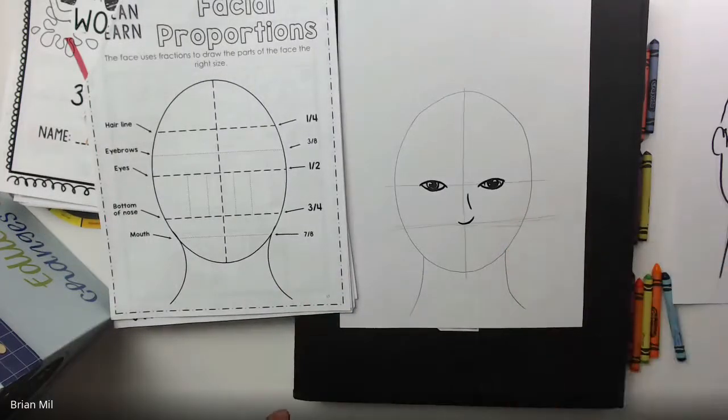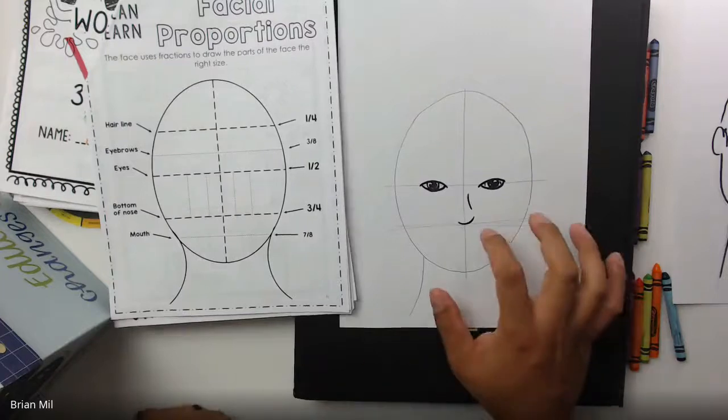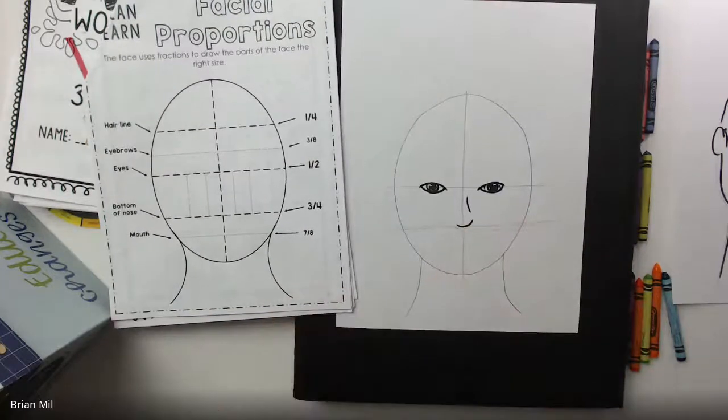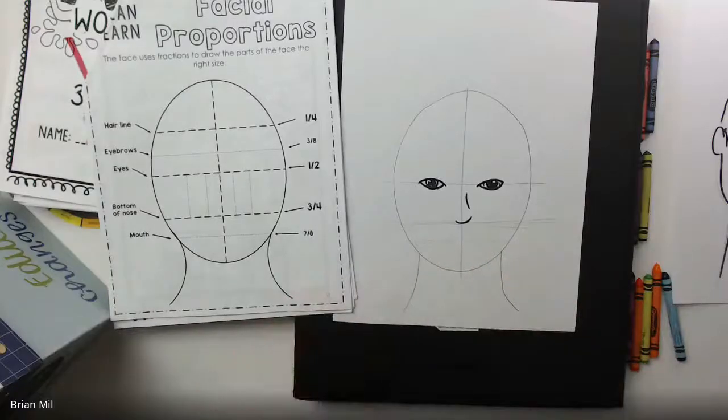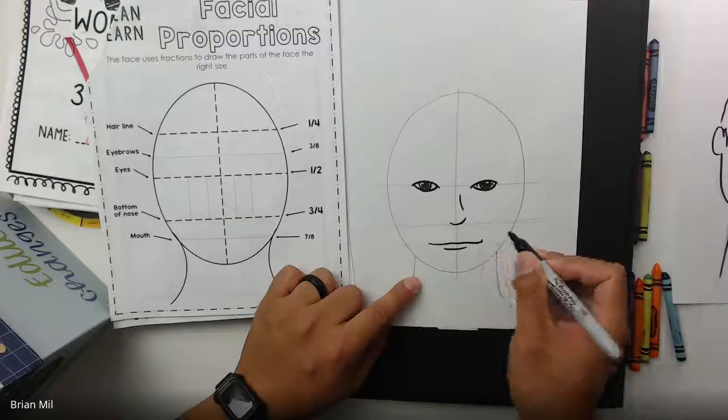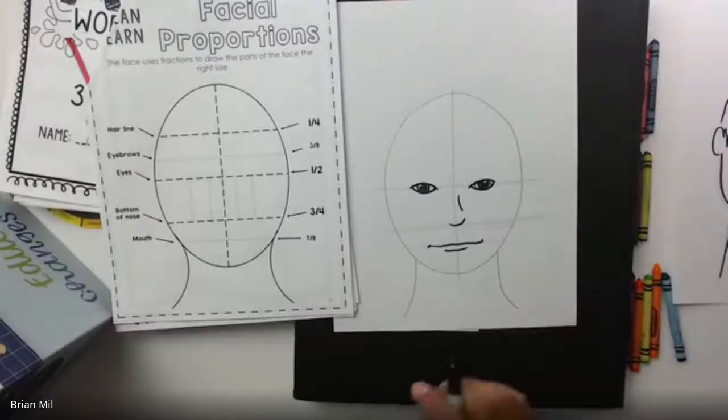Alright. Now what they're saying is halfway or one third of the way from the bottom of the nose to the bottom of the chin is where the mouth starts. That's what they're saying. Let's try that. It's okay. Alright.